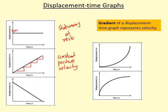That's because the gradient of these graphs represents the velocity. So the steeper the gradient, the faster the object is moving. And if the gradient is negative, it's downwards, then that means the object is traveling in the opposite direction.